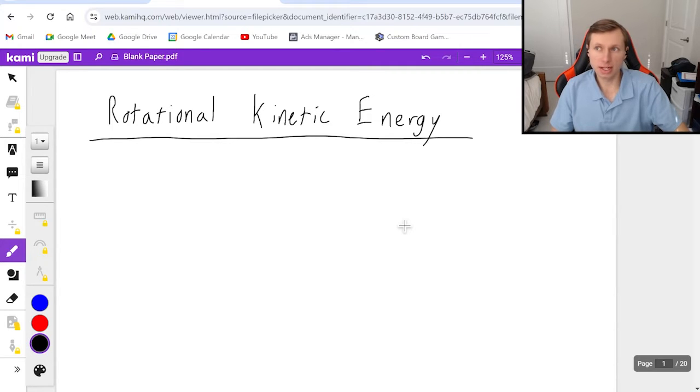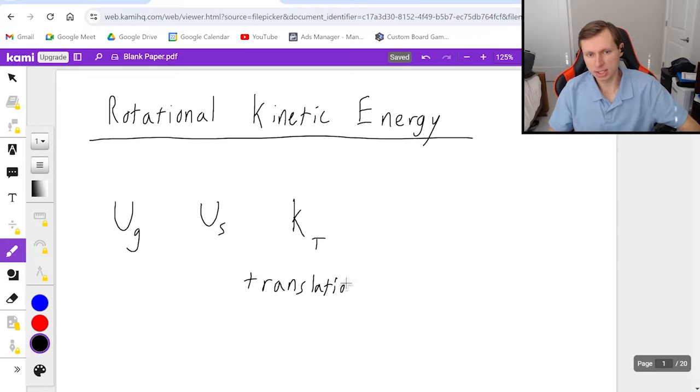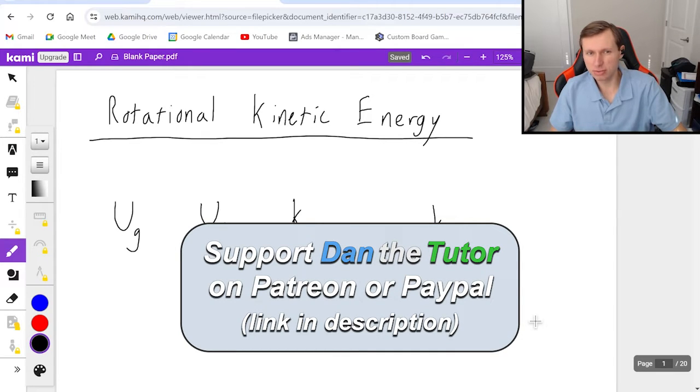So this is the fourth kind of energy that we talk about in this class. The first three kinds are UG, gravitational potential energy, US, spring potential energy, and K, which we normally call kinetic energy but now I'm going to call KT where T stands for translational kinetic energy. And then the last kind of energy we have is Kr, which stands for rotational kinetic energy. And this is going to fit in with all of our conservation of energy equations.